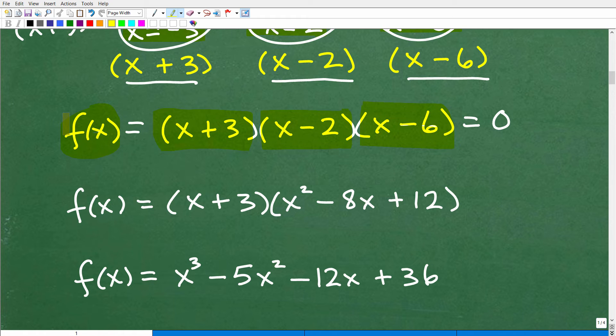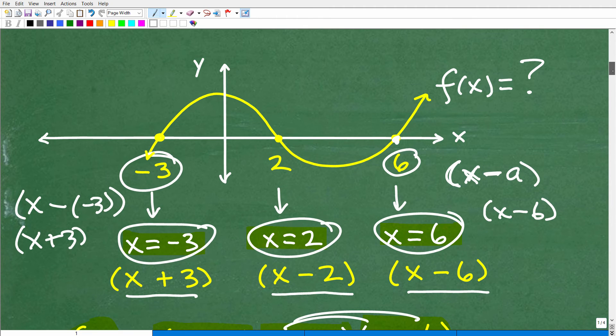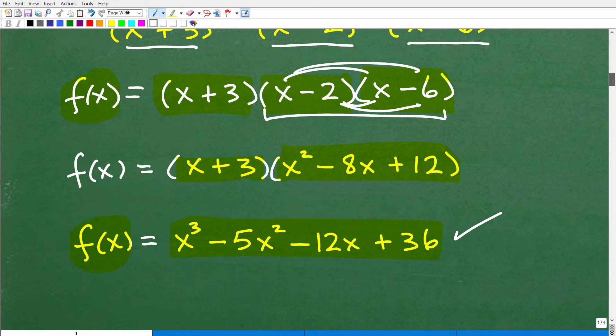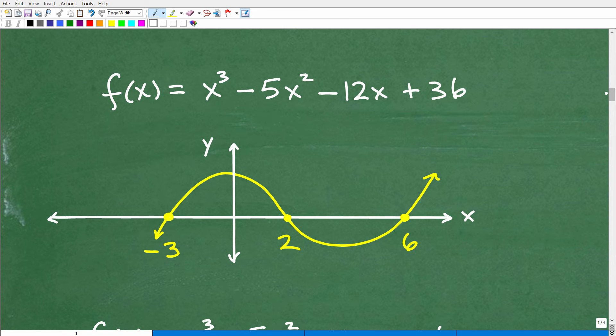If I really wanted to establish this function completely, we could start multiplying these linear factors together. I would start with these two: x minus 2 times x minus 6. You can use the FOIL method. You would get this trinomial. Then I would multiply that by x plus 3. What you're going to end up in the end when you do all this multiplication is x cubed minus 5x squared minus 12x plus 36. This is the answer. We just wrote the polynomial function that goes with this graph.